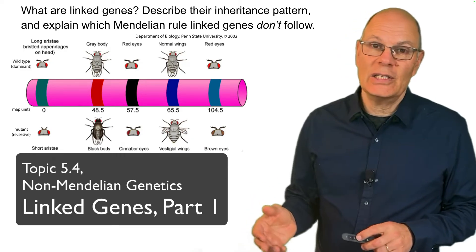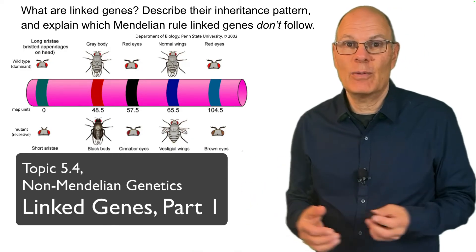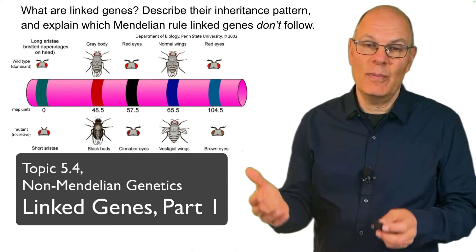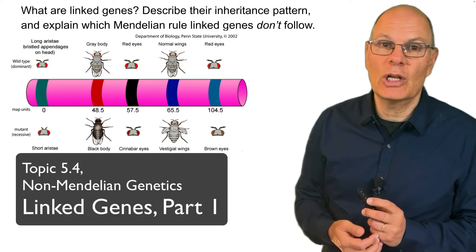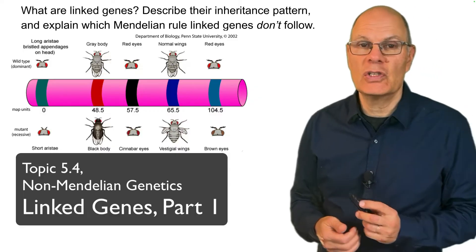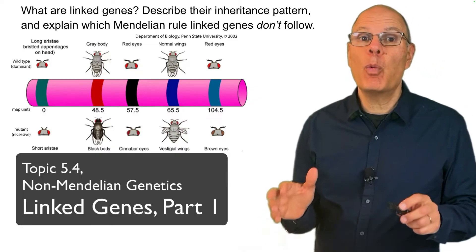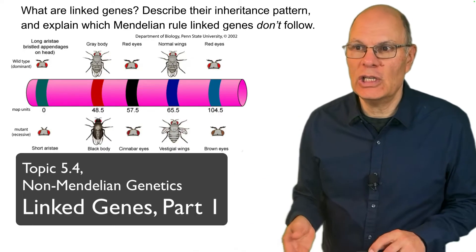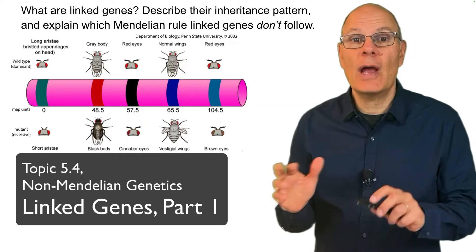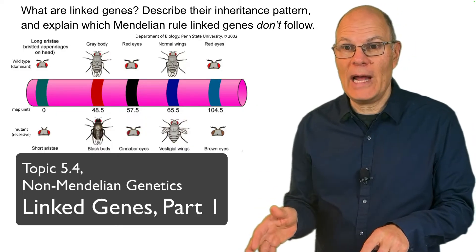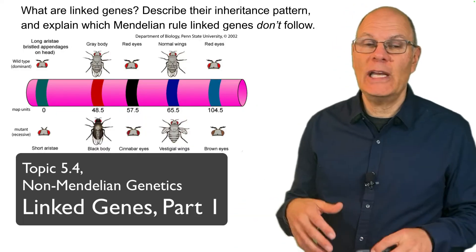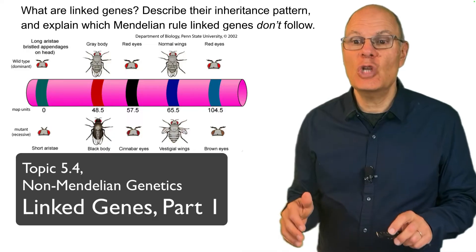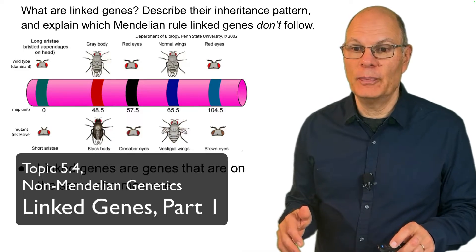Non-Mendelian genetics is about genetic principles that were discovered after Mendel's original contributions. One of the most important of these involves linked genes. What are linked genes? Describe their inheritance pattern and explain which Mendelian rule linked genes don't follow.